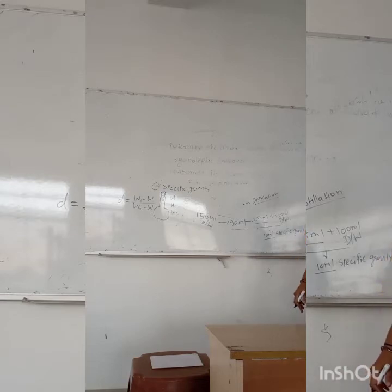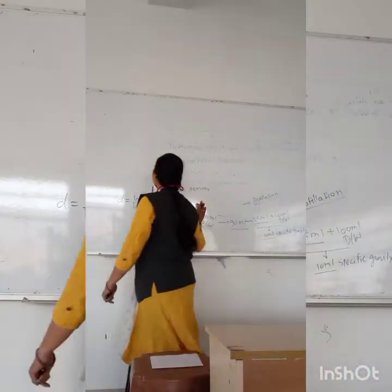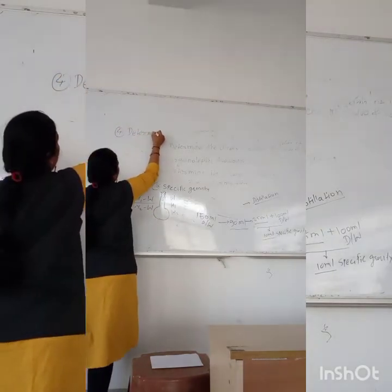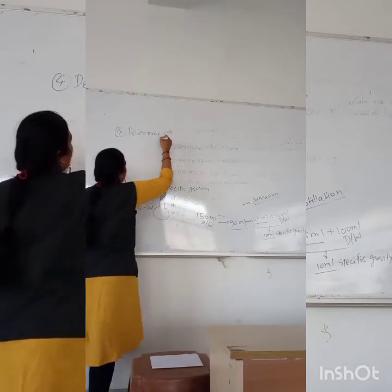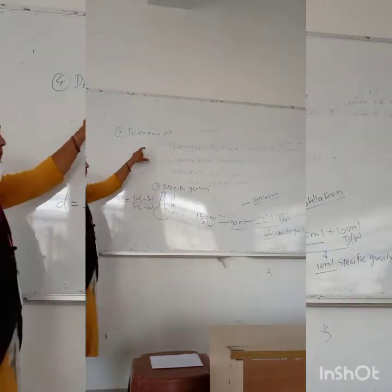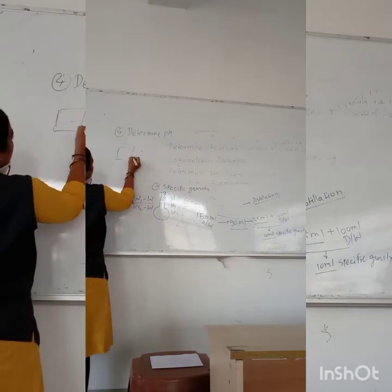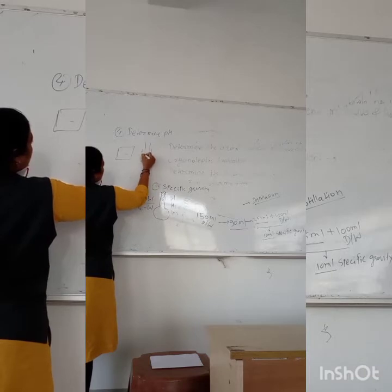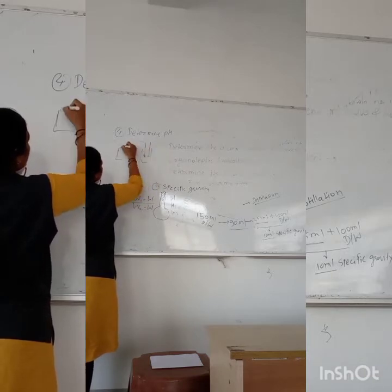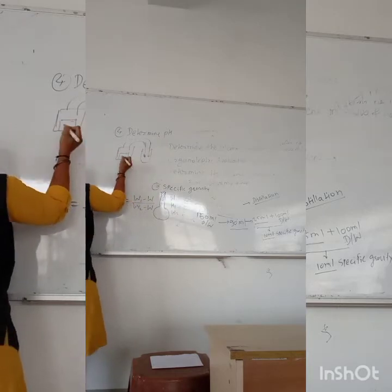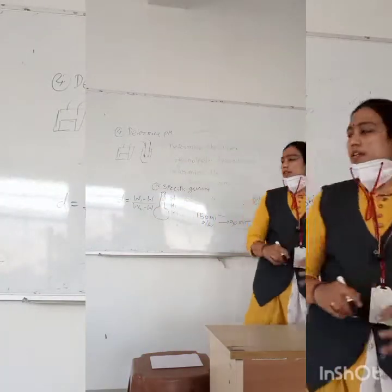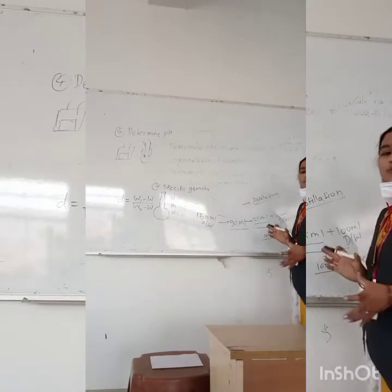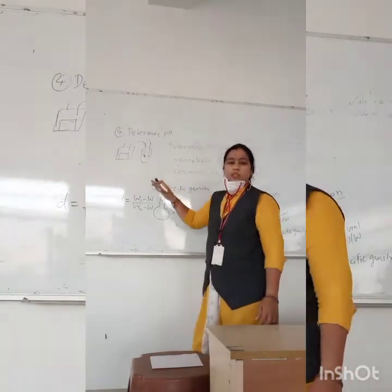The fourth parameter is pH determination. For this we require a pH meter. Incorporate the pH meter probe into the formulation and you can read the pH directly. It is the easiest method to determine pH — very simple.